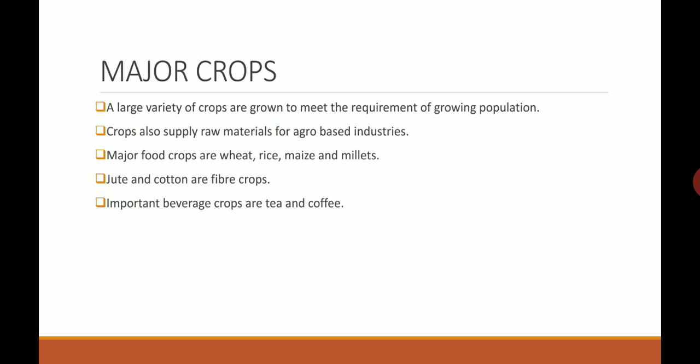We all know that there is a large variety of crops being grown all over the world to meet the requirements of the growing population. Crops also supply raw material for many agro-based industries. Major food crops all over the world are wheat, rice, maize and millets. Jute and cotton are fiber crops — fiber or cloth is made from these.